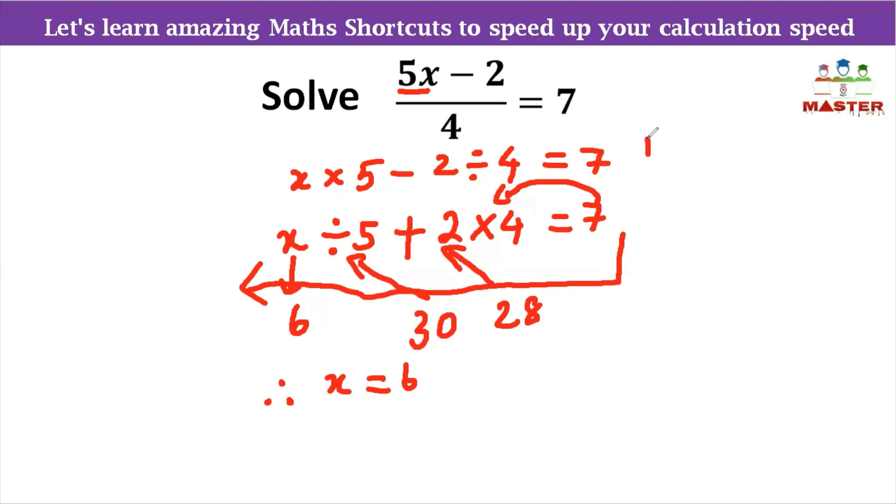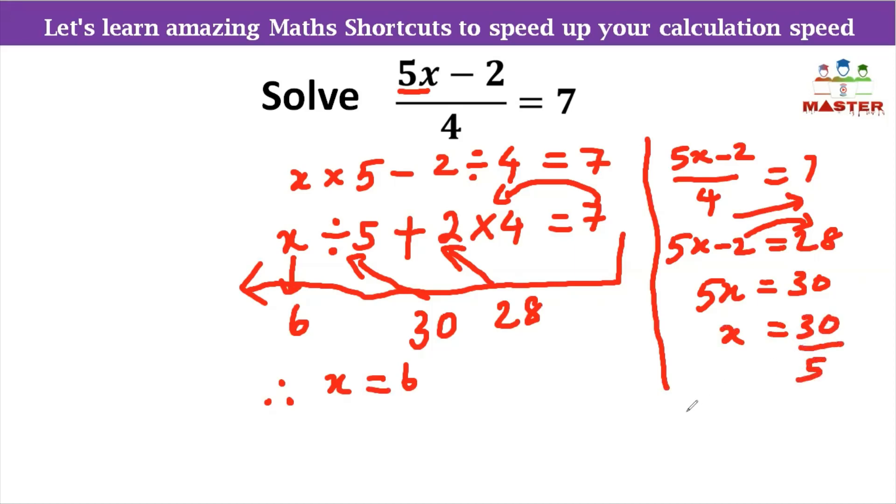Now we can solve this using the standard method. 5x minus 2 divided by 4 equal to 7. So in the denominator, 4 in the side, cross multiply. 5x minus 2 is equal to 4 times 7, which is 28. Next, minus 2 transpose to the other side becomes plus 2. 28 plus 2 is 30. So 5x is equal to 30. So 5 times x is equal to 30. Then x equal to 30 divided by 5. Therefore, x equal to 6. That is the answer.